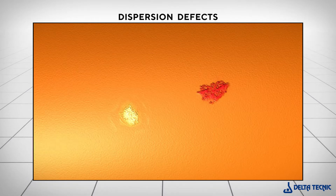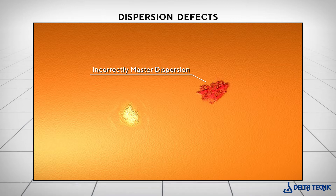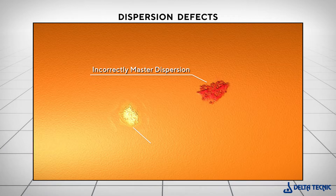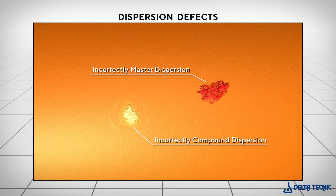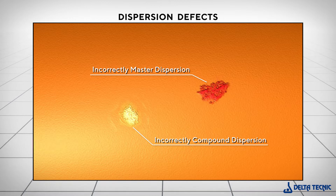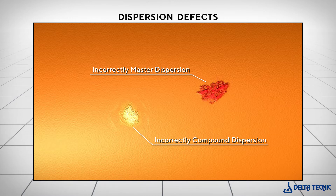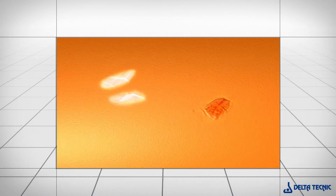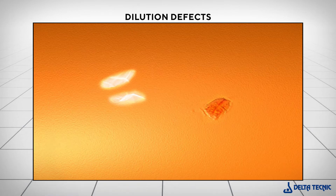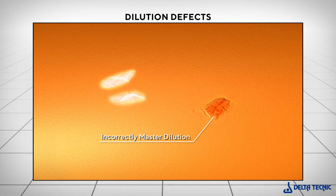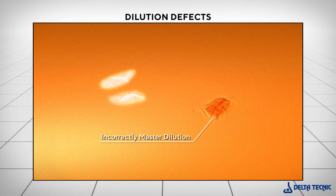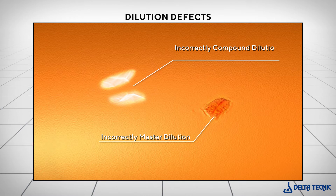Dispersion defects can generally be caused by poor dispersion of the pigments during the master batch production process, or poor dispersion of the components of the base compound in its production process. Dilution defects, on the other hand, can be caused by some master batch pellets not being properly diluted in the plastic transformation process, or faulty dilution of the compound pellets in the transformation process.